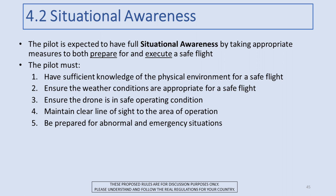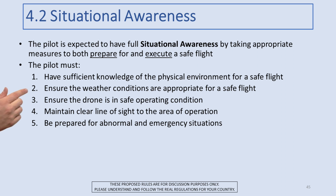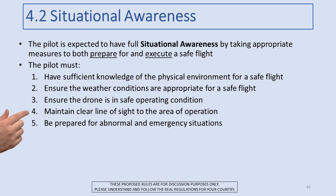Situational awareness is critical for good safe operation. I've got five specific items that tie into situational awareness. The basic notion is that the pilot is expected to have full situational awareness by taking appropriate measures to both prepare for and execute a safe flight. The five areas are: sufficient knowledge of the physical environment, appropriate weather conditions, the drone itself in safe operating condition, maintaining a clear line of sight to the area of operation, and being prepared for both abnormal and emergency situations.